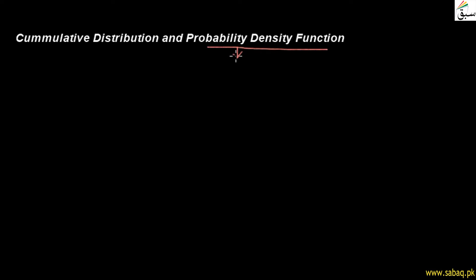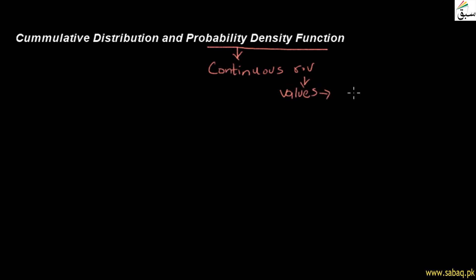Today's topic is Cumulative Distribution and Probability Density Function. Let's see what is the relationship between these two. For the Probability Density Function, we have a Continuous Random Variable. For that, we have a function with corresponding values — for all values, we have probabilities.